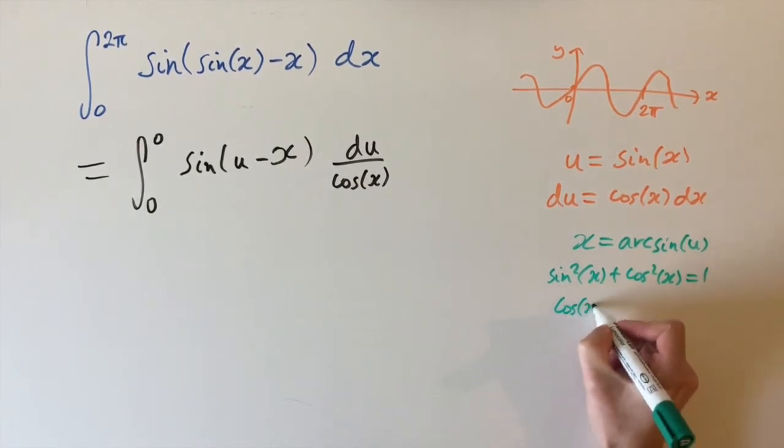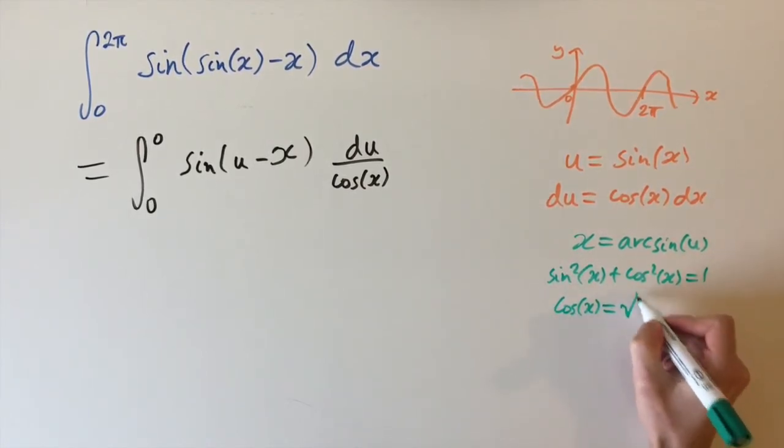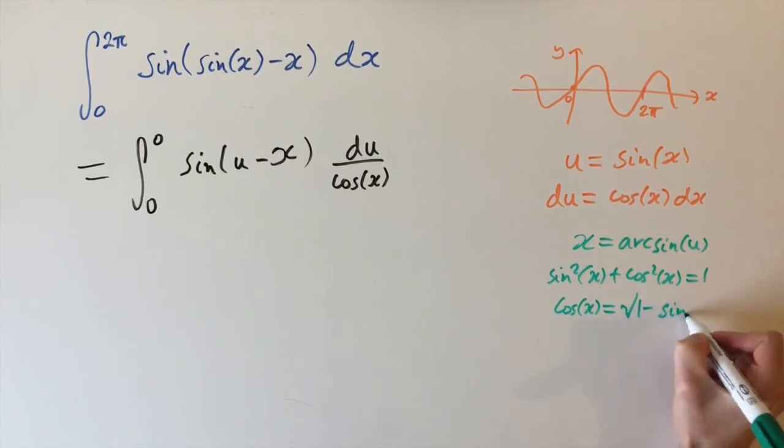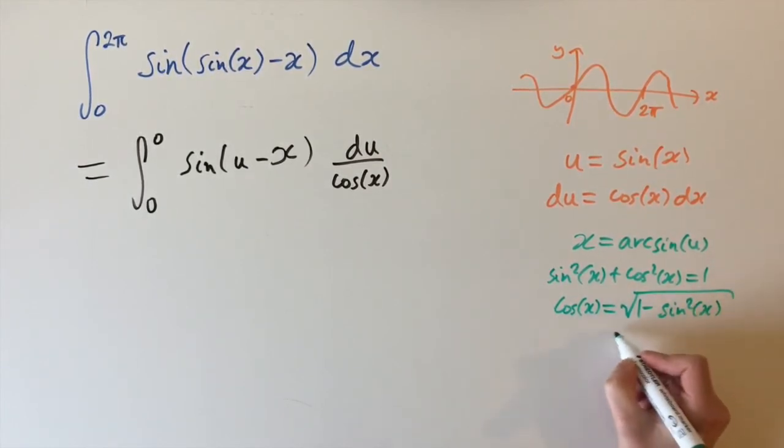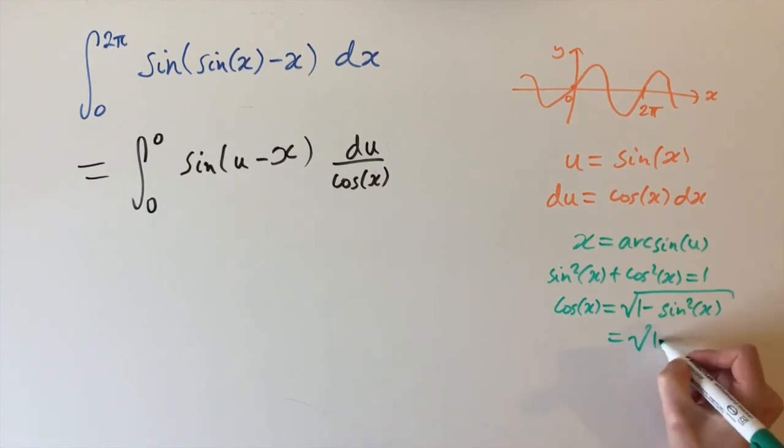So this tells us that cos(x) = √(1 - sin²(x)). And we can just substitute in u for sin(x). So this is the same as √(1 - u²).